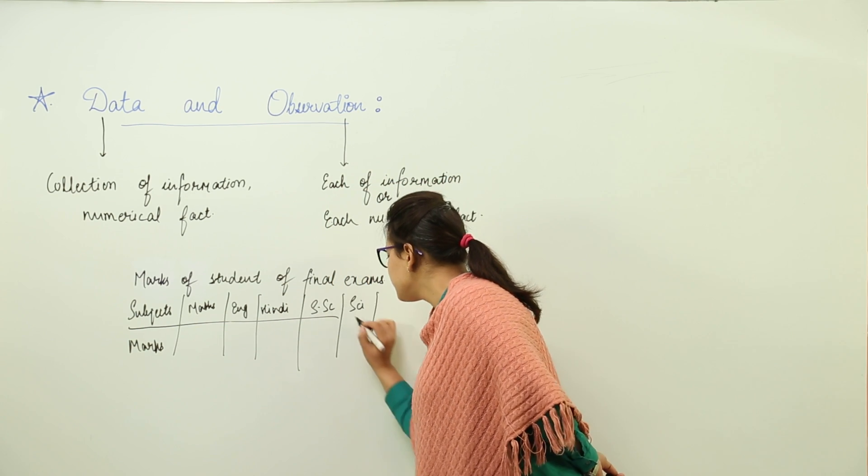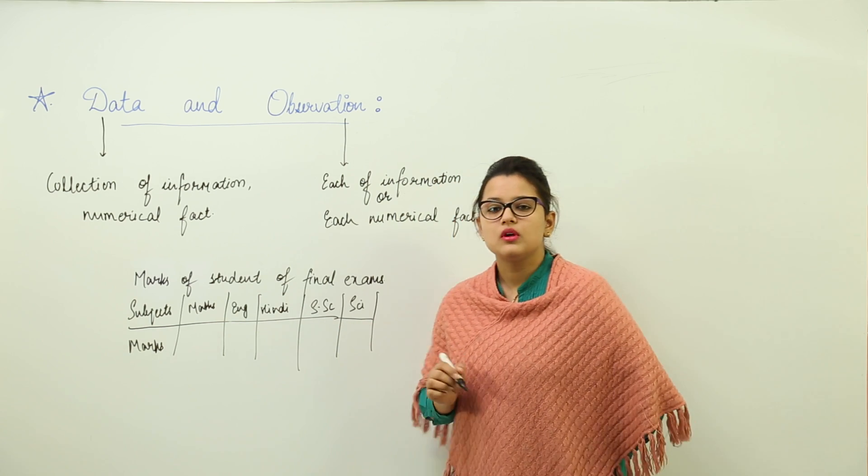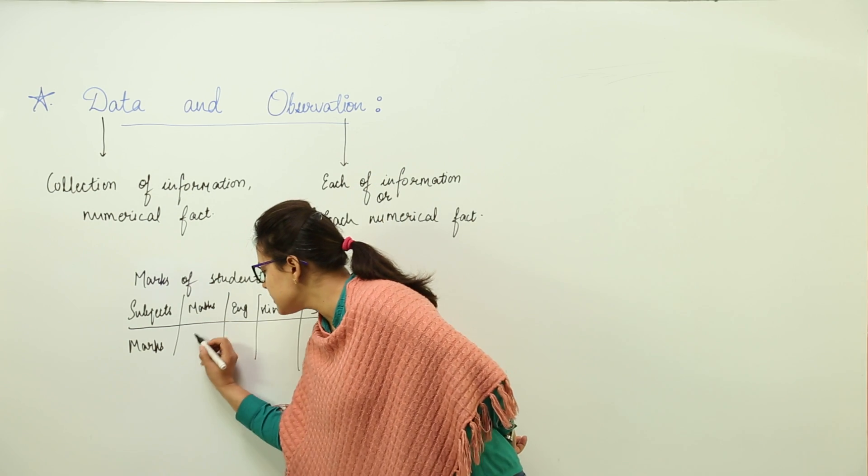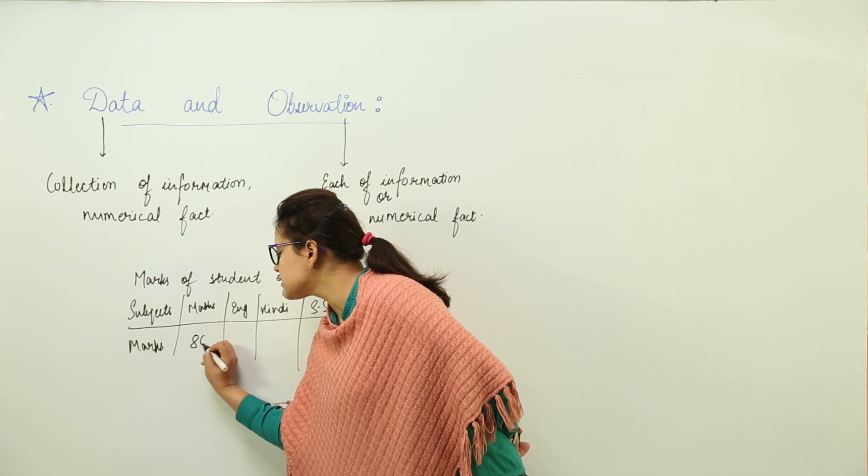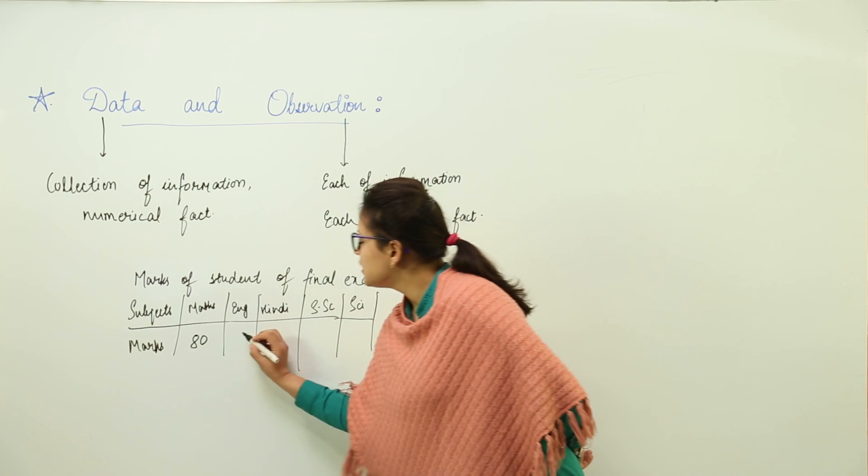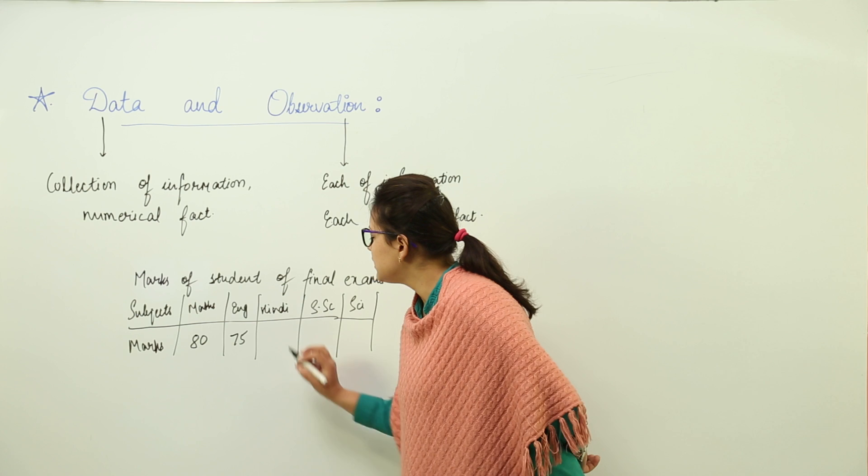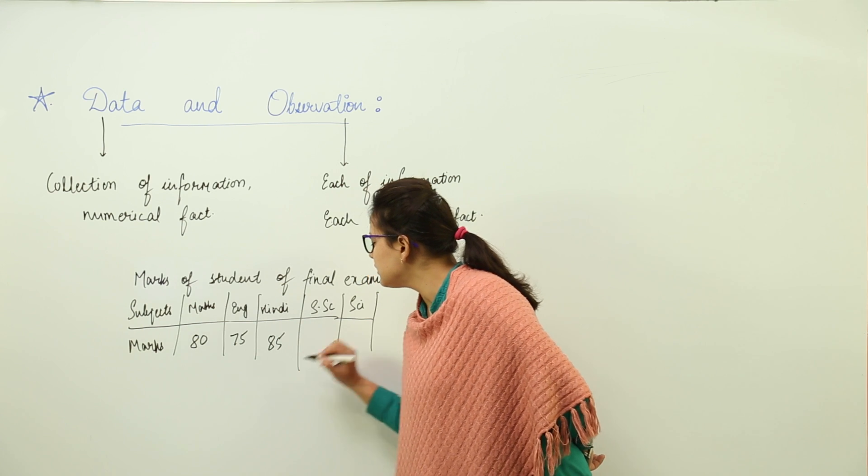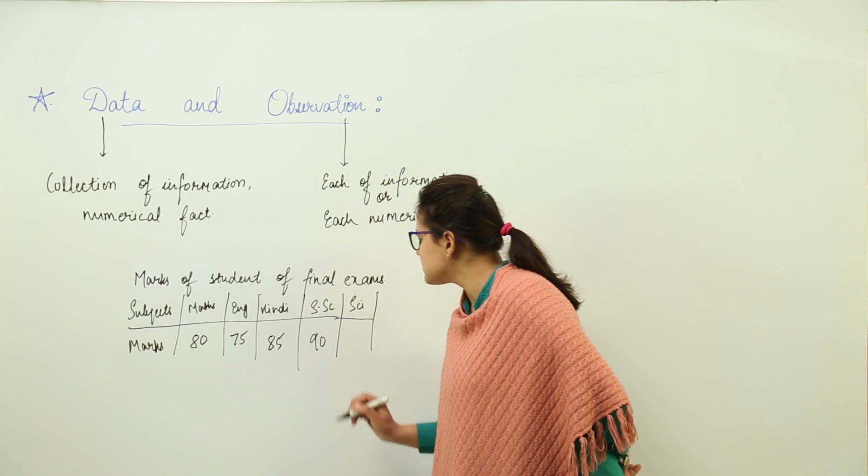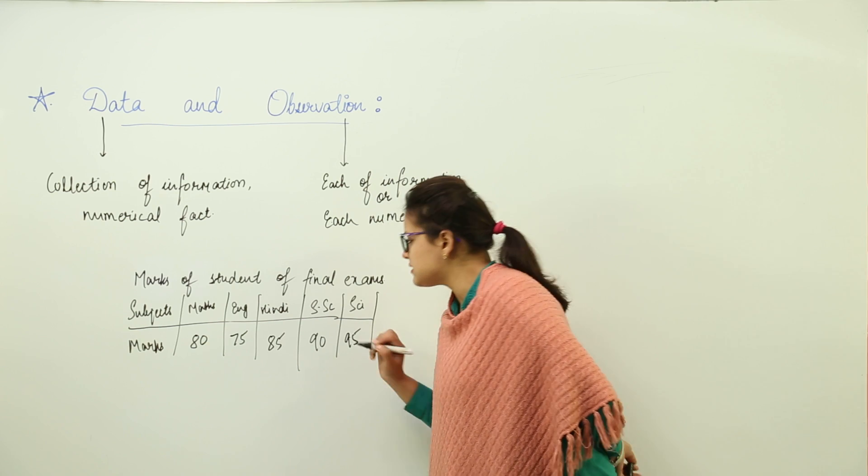Now we have the five subjects. Let us assume some marks. Let's say the student has secured 80 marks out of hundred in Maths, 75 in English, 85 in Hindi, 90 in Social Sciences, and 95 in Sciences.